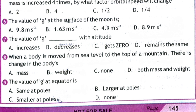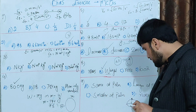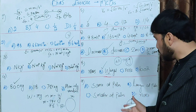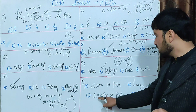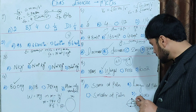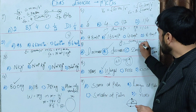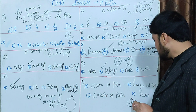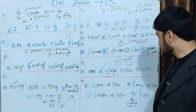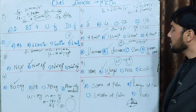Final MCQ: The value of g at the equator compared to the poles. The Earth is not a perfect sphere — the radius at the equator is larger than at the poles. Since g = GM/r², a larger radius means a smaller g. Therefore g at the equator is smaller than at the poles. Option B — larger at poles — is correct.